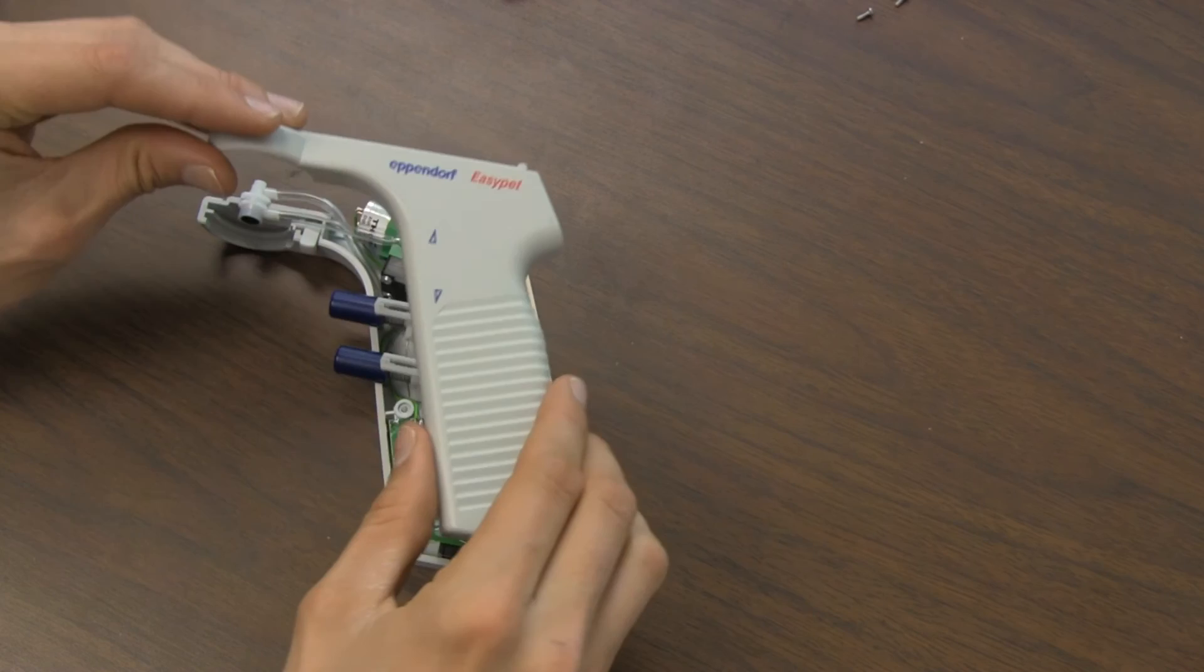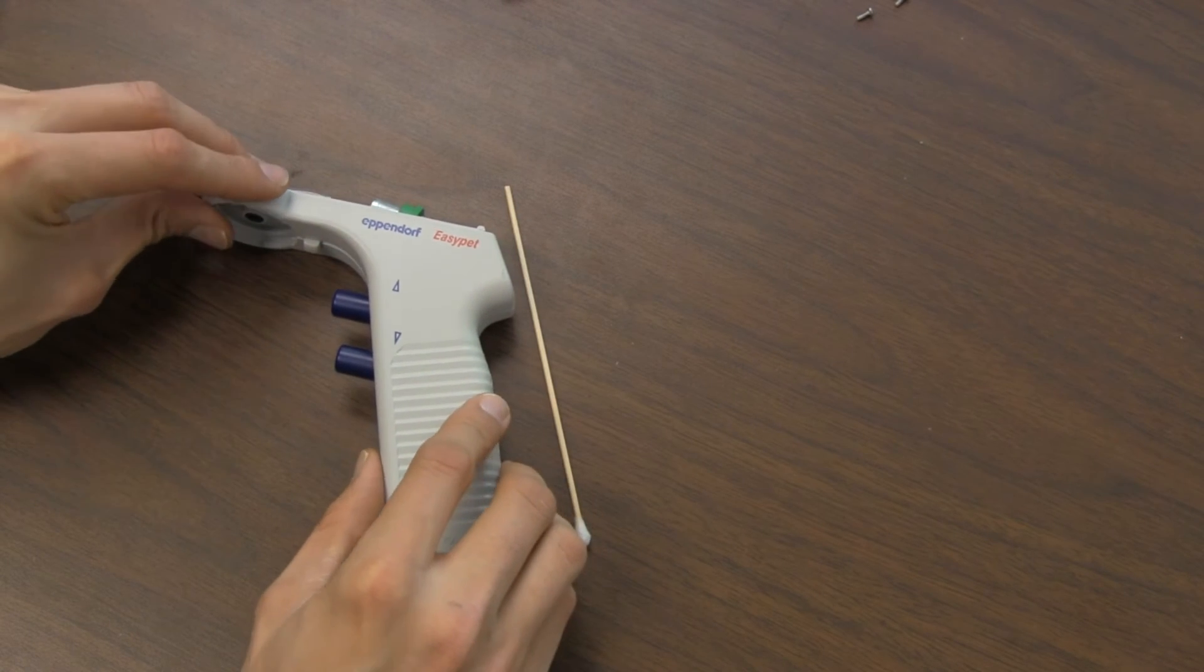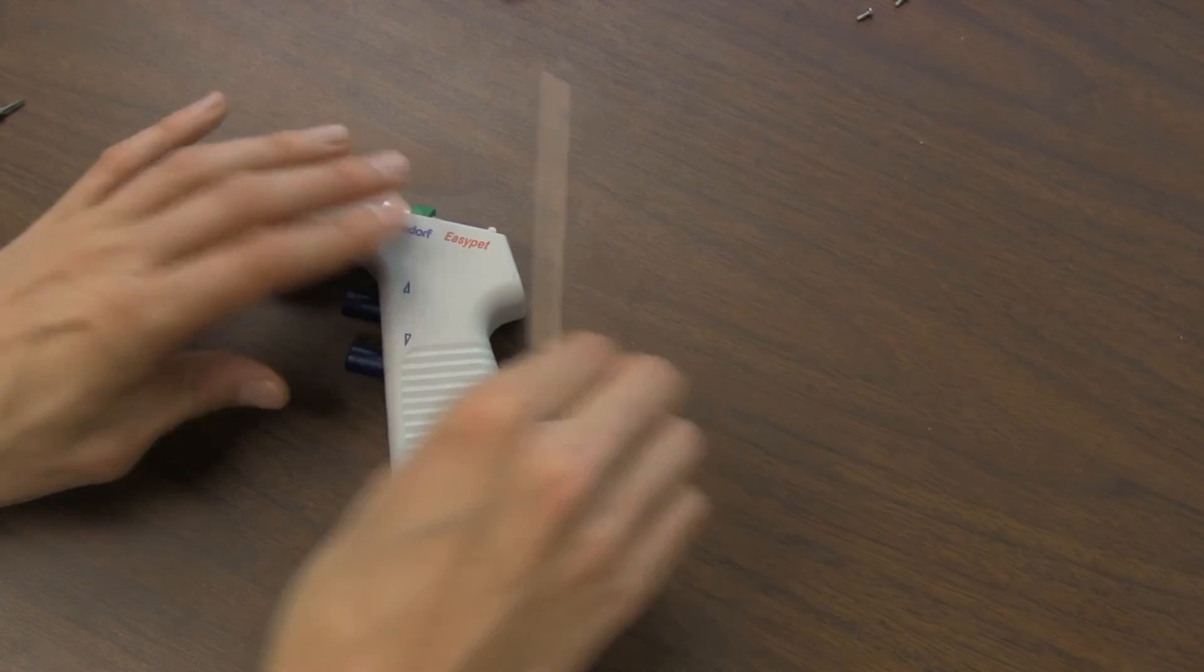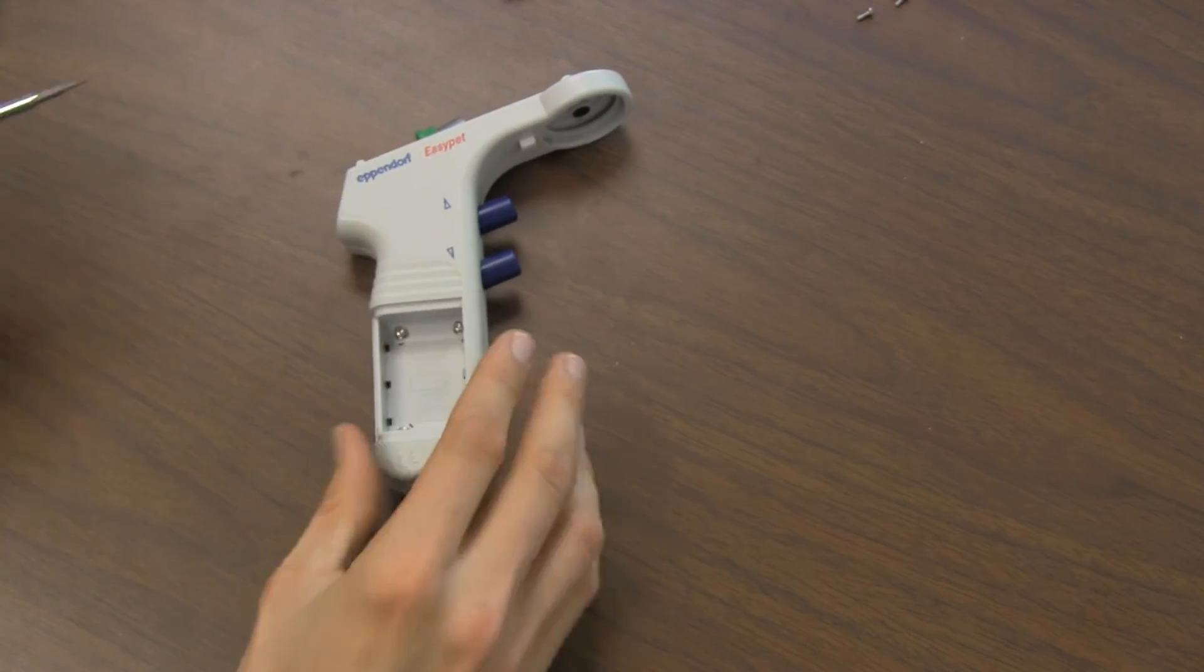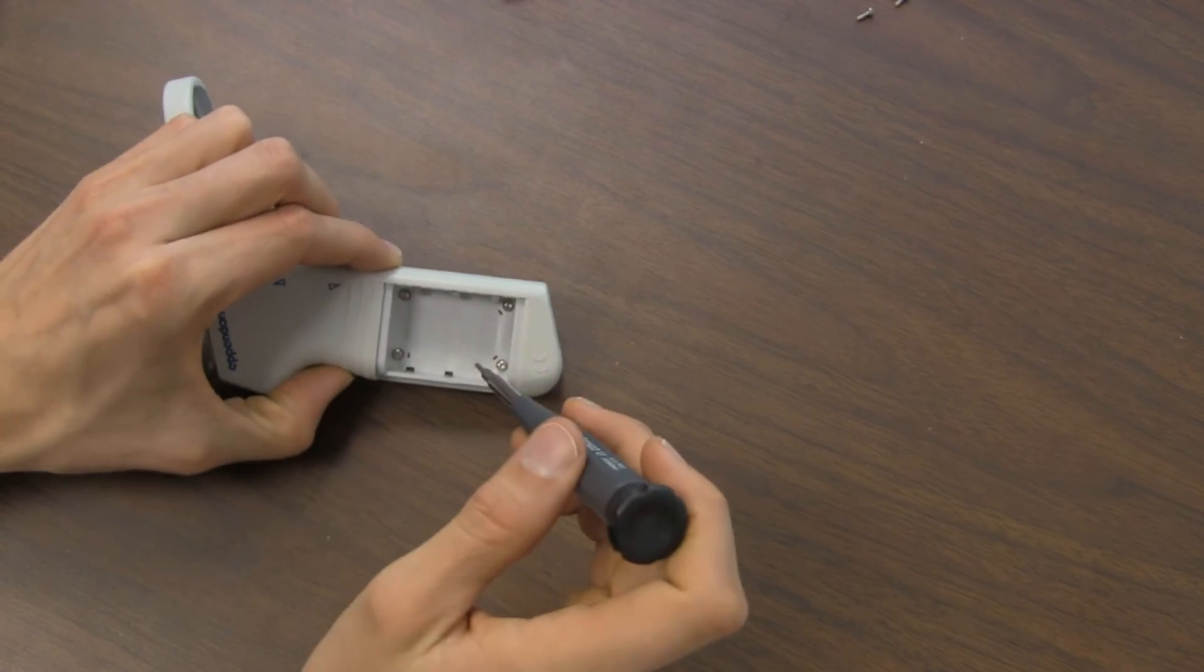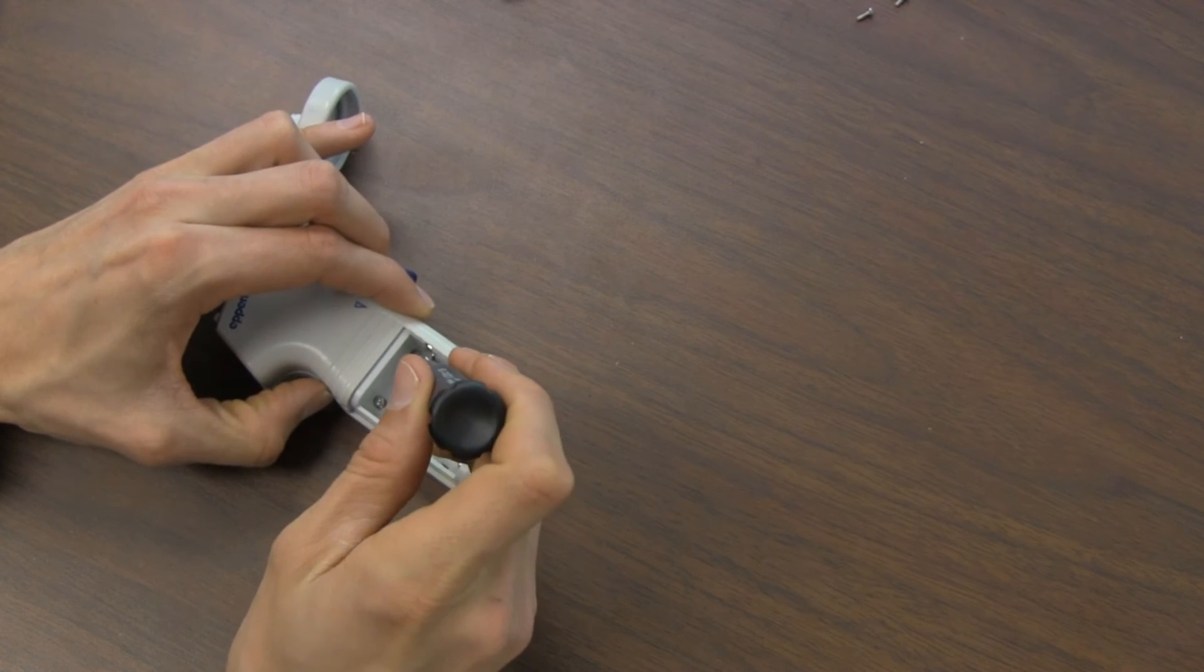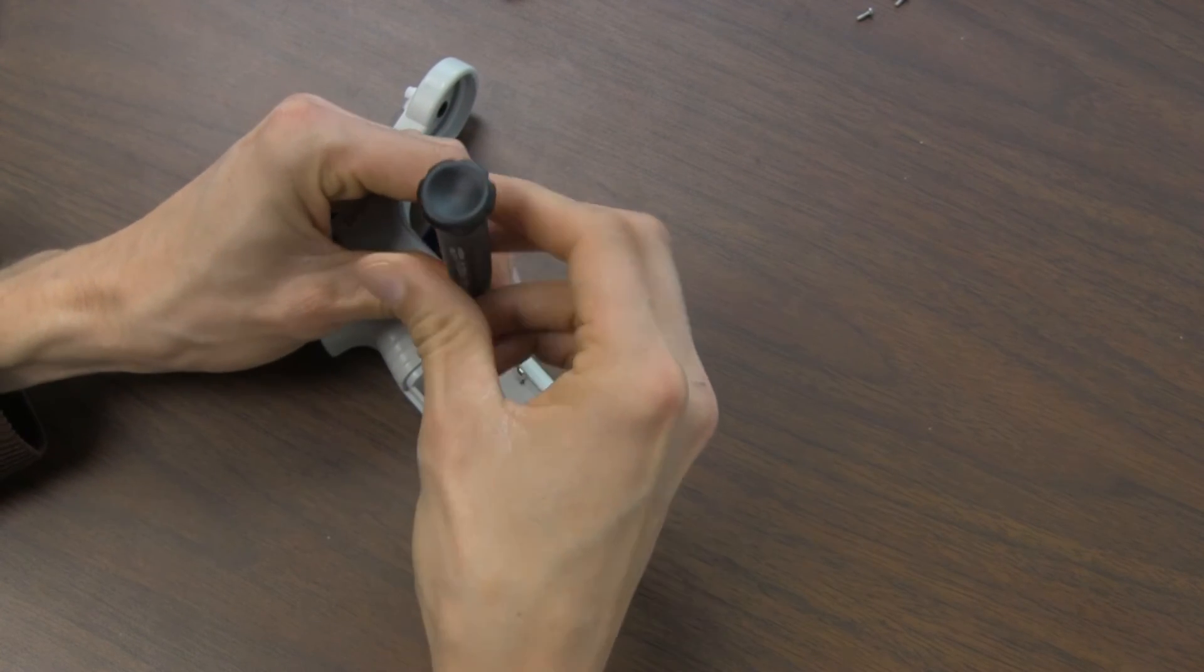Put the handle back on to reassemble. Flip it over. If these screws stayed in place, if your screws fall out, put the screws back in and screw the handle.